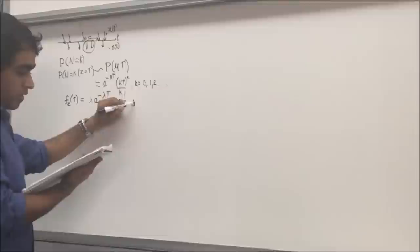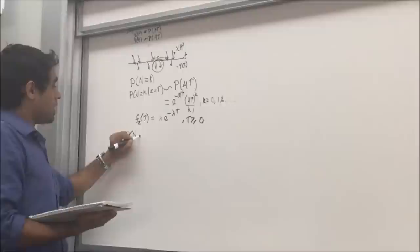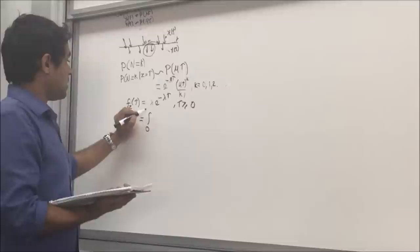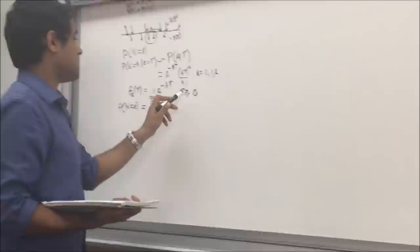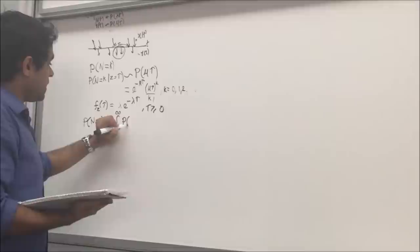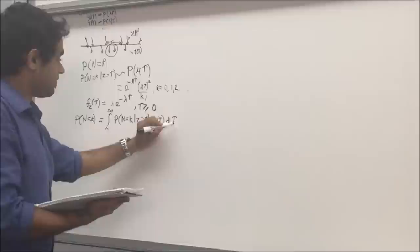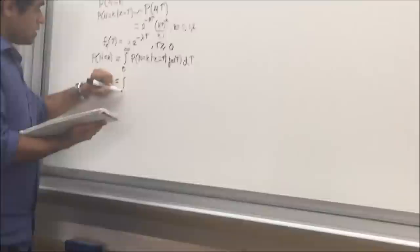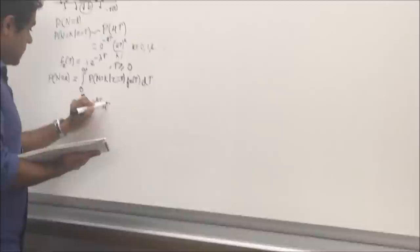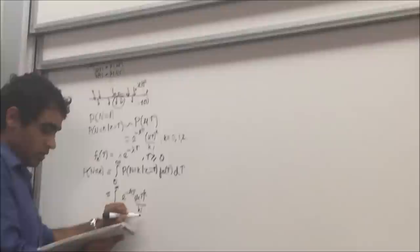Now we can find P(N=k), which equals the integral from 0 to infinity — since the process is 0 for tau less than 0 — of P(N=k | Z=tau) times f_Z(tau) d tau. This gives us the integral from 0 to infinity of e raised to minus mu*tau times mu*tau raised to k divided by k factorial, times lambda times e raised to minus lambda*tau, d tau.